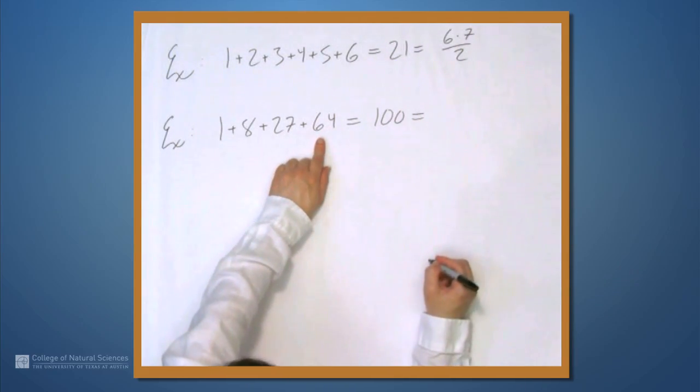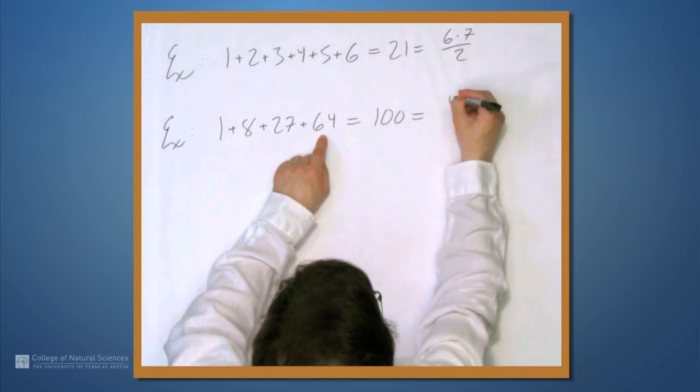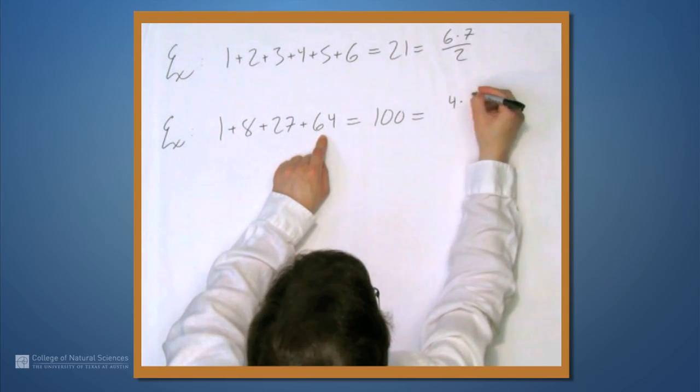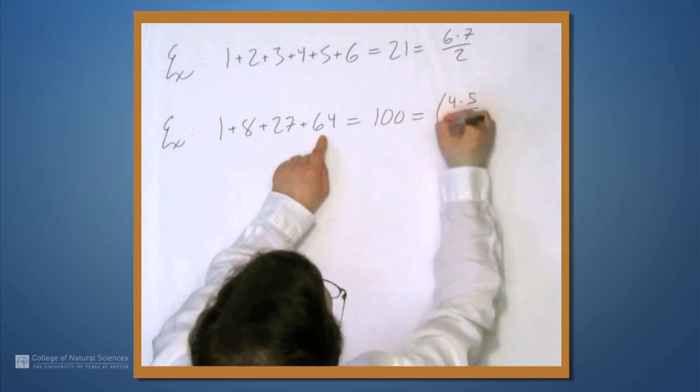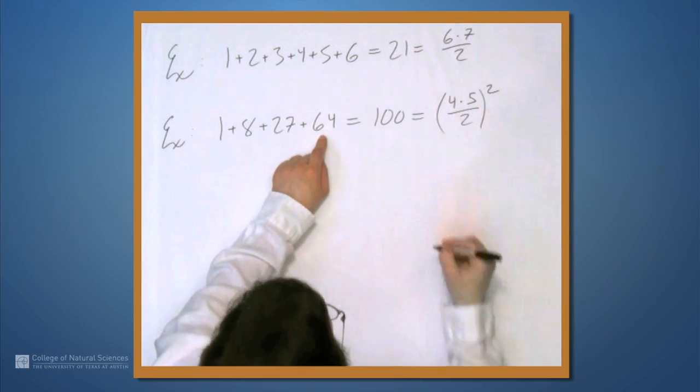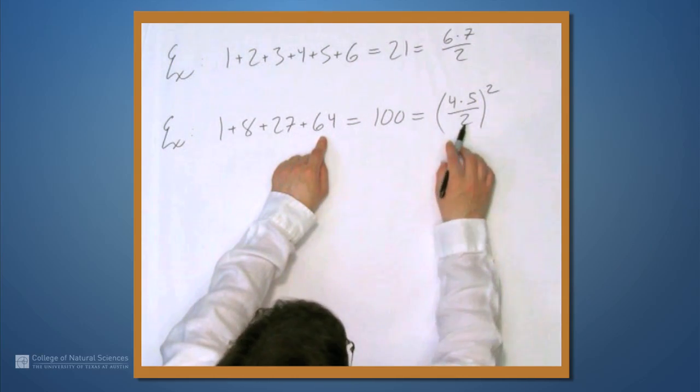Now, we should plug it into that third formula that we just saw. n is 4, so we have 4 times n plus 1, which is 5. Divide that by 2 and square it. And this is true, right? Because 4 times 5 is 20 over 2 is 10. We square it, we get 100.